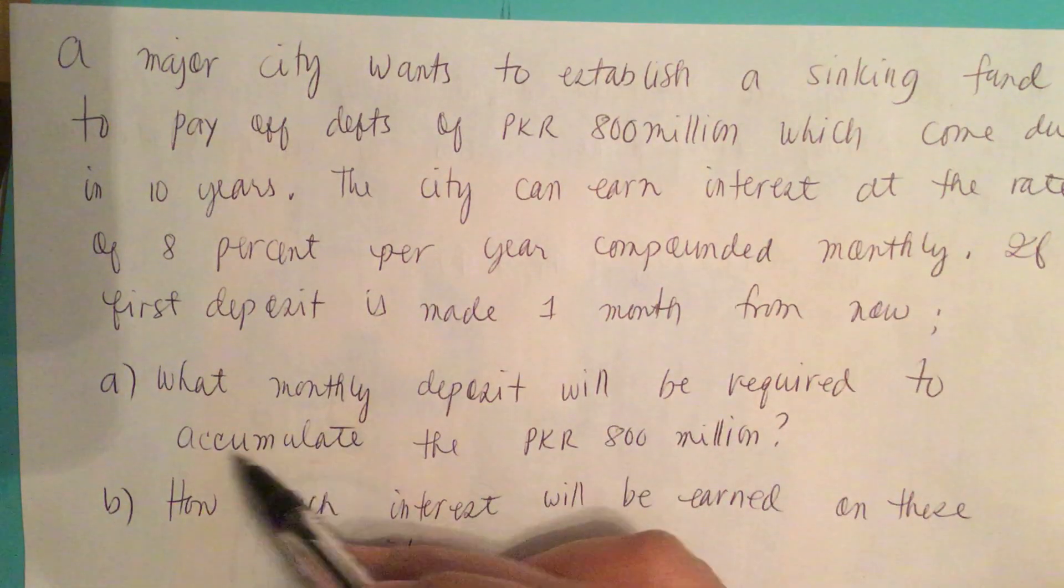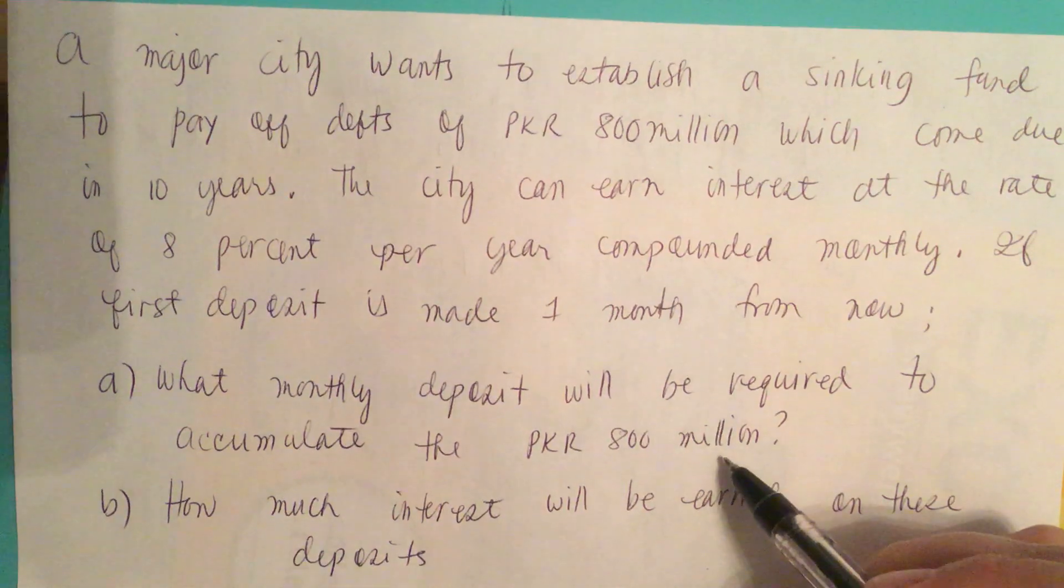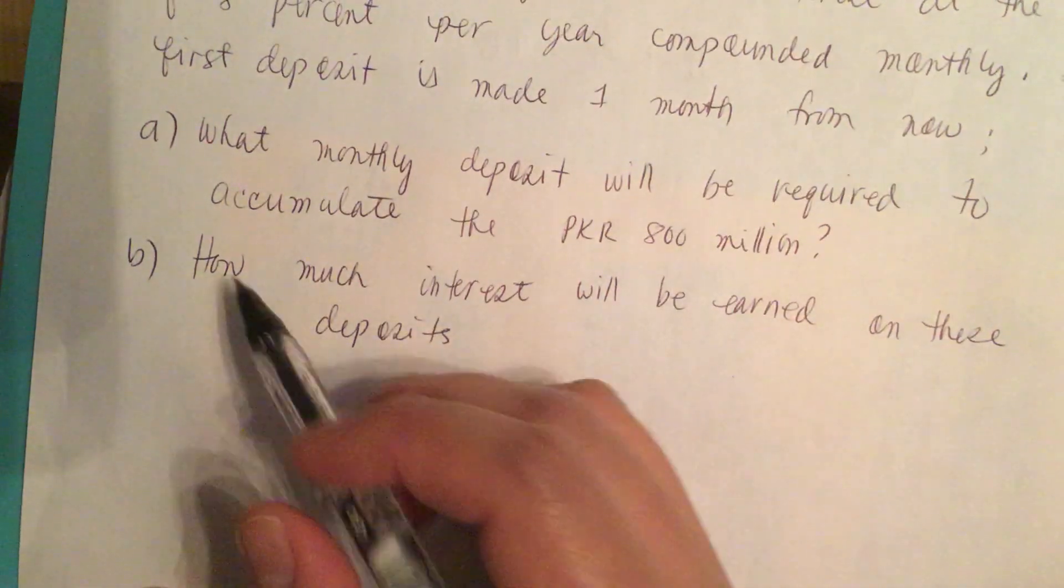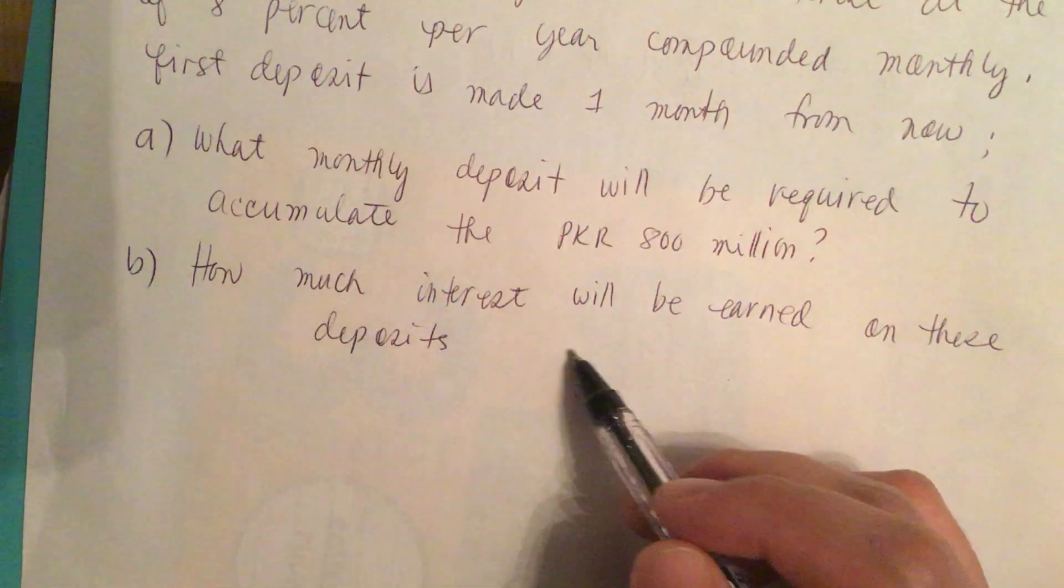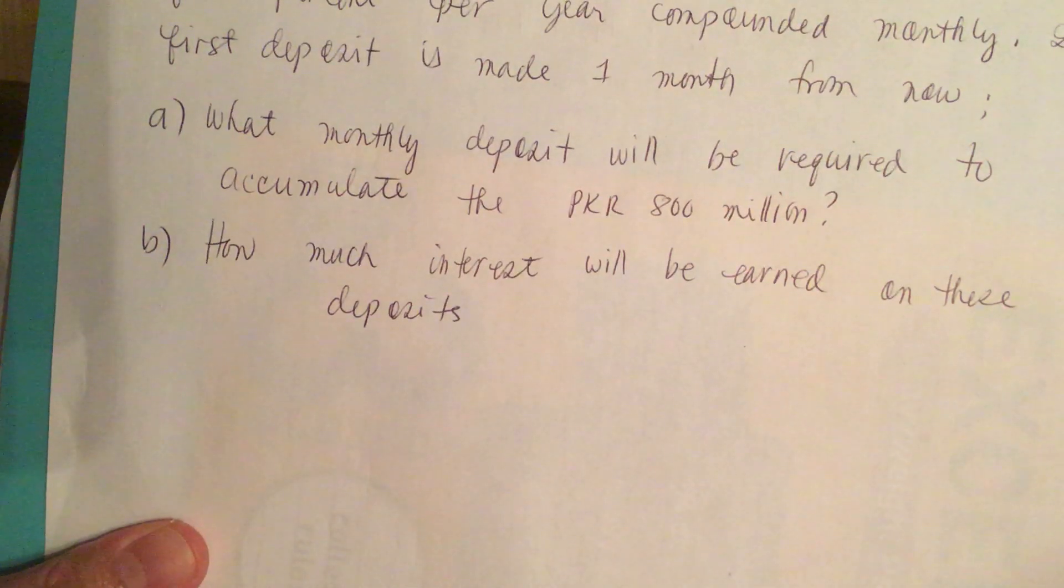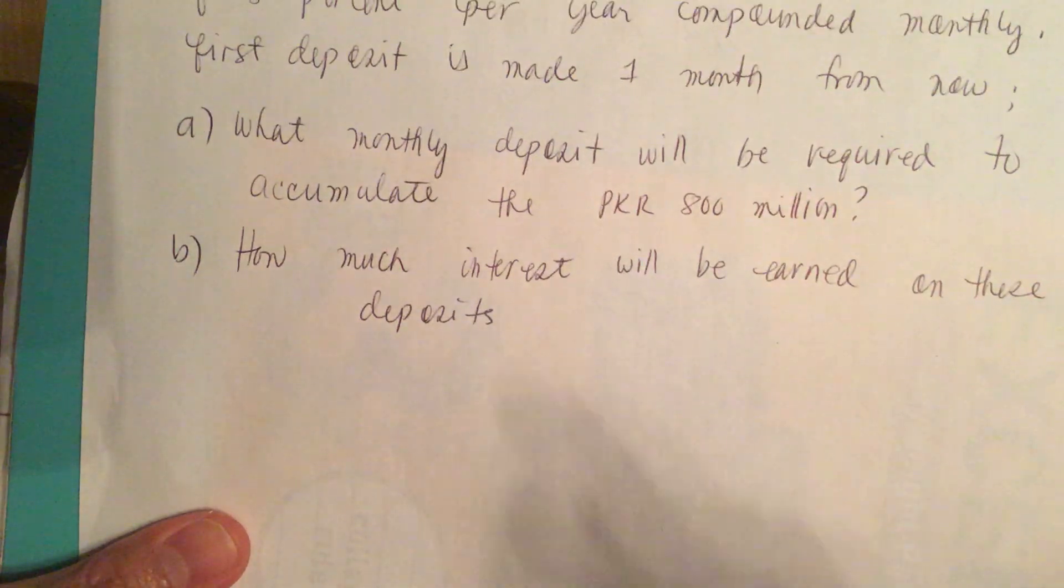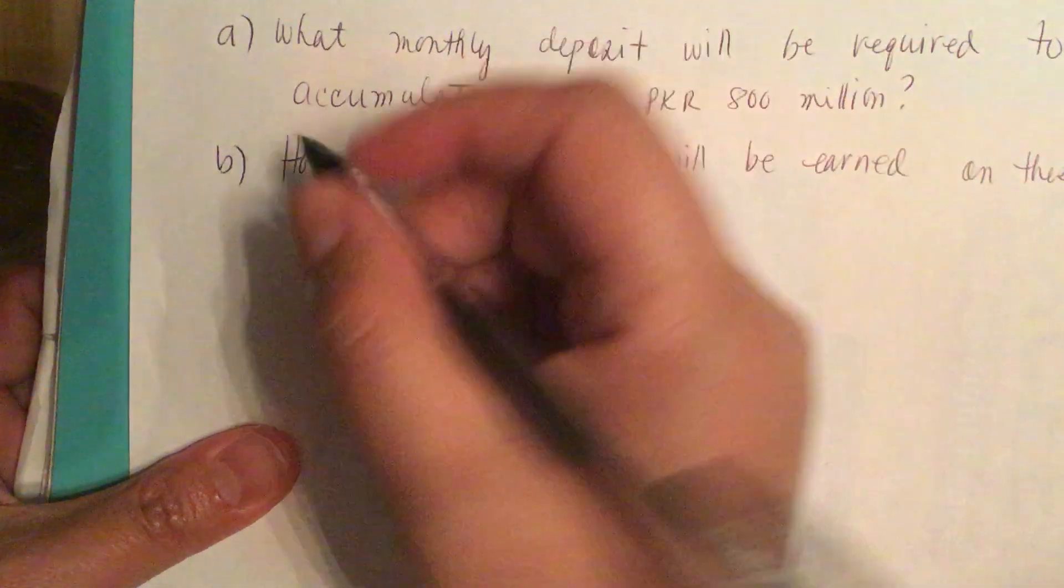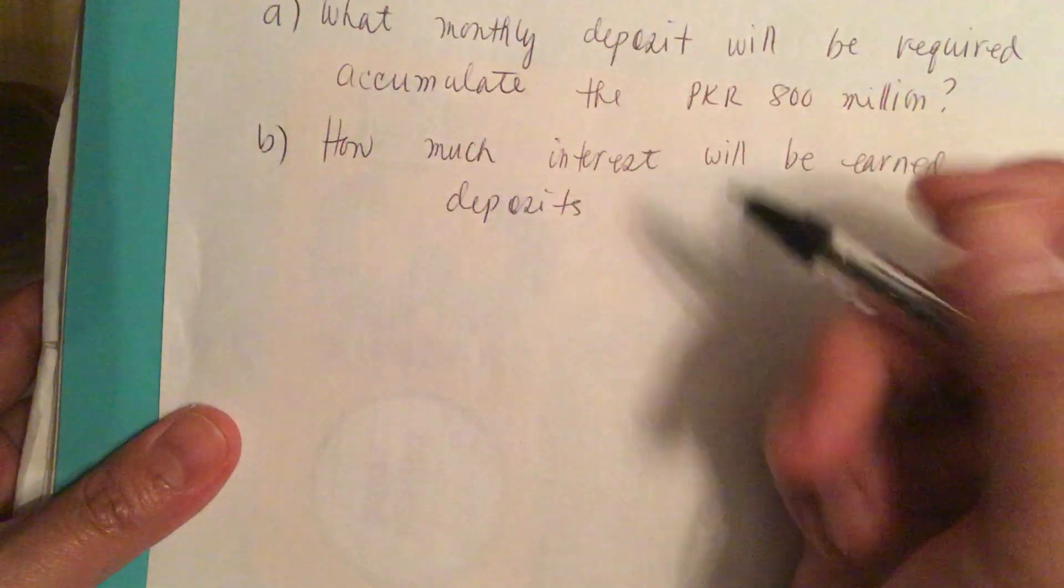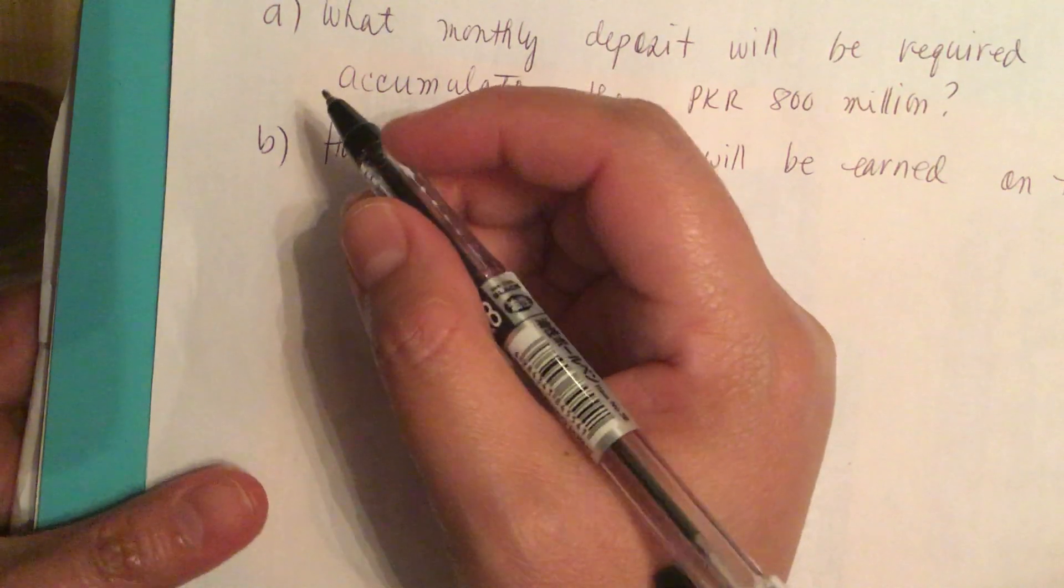a) What monthly deposit will be required to accumulate the PKR 800 million? b) How much interest will be earned on these deposits? So this is an annuity problem.